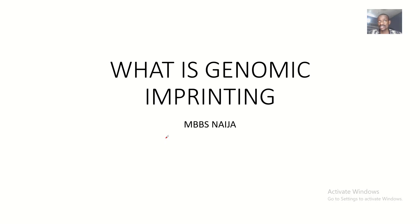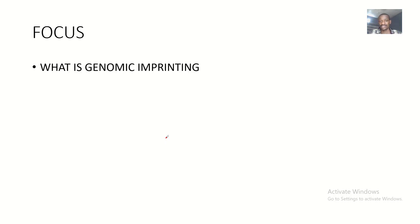Another very important concept in genetics is what we call genomic imprinting. This question was actually asked in an exam, with sub-questions for 2 marks, 3 marks, and 5 marks. They asked students: what is genomic imprinting? These types of questions you have to watch out for, because once you don't know, you don't know.